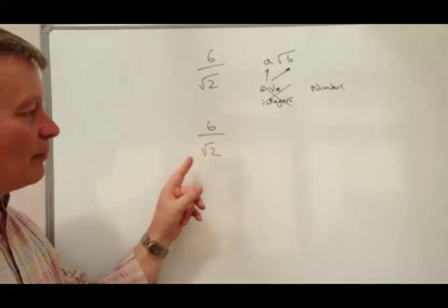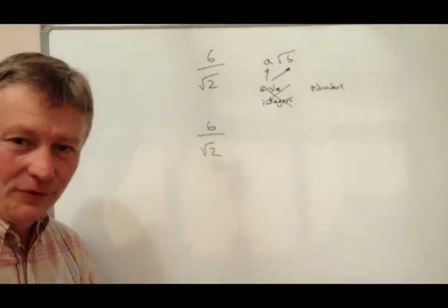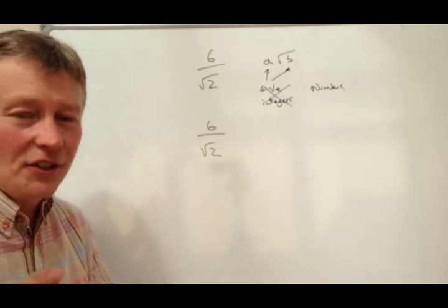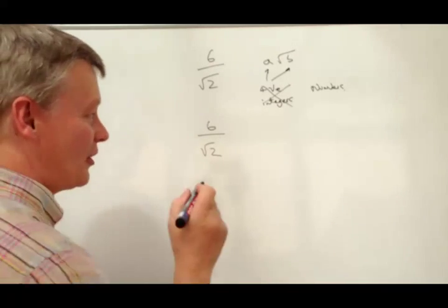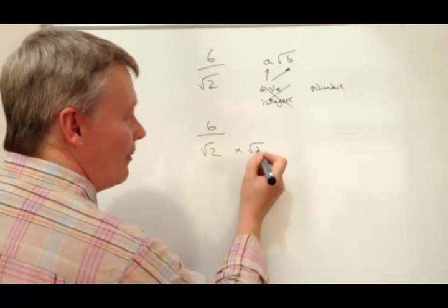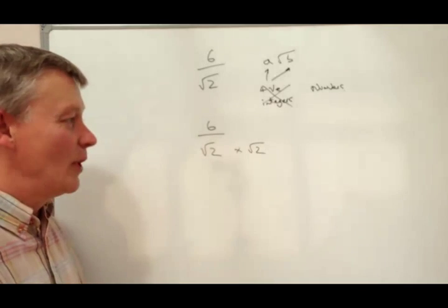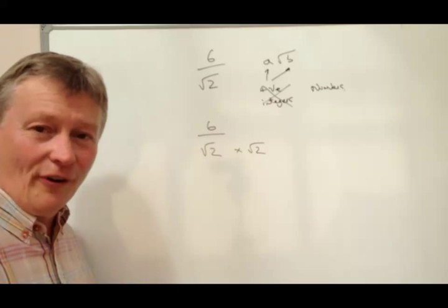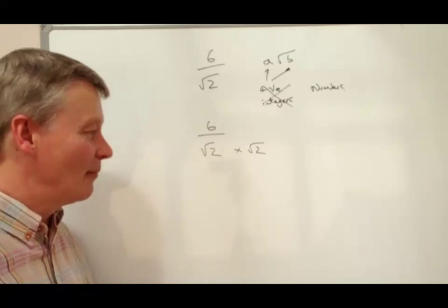So, we've got 6 divided by root 2. Well, if I multiply root 2 by root 2 together, I get the square root of 4, and the square root of 4 is 2. I'll show you what I mean - root 2 times root 2 equals the square root of 4, and the square root of 4 is 2. Perfect, so that's going to work for me.